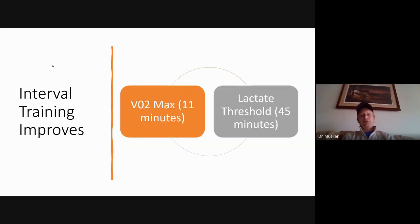Interval training can improve two major areas of endurance athletes: VO2 max and lactate threshold. For runners, your VO2 max is about the pace that you can maintain for 11 minutes. Your lactate threshold is about the pace that you can maintain for 45 minutes.